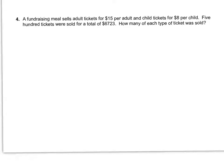The last question for today says that a fundraising meal sells adult tickets for $15 per adult and child tickets for $8 per child. 500 tickets were sold for a total of $6,723. How many of each type of ticket was sold?